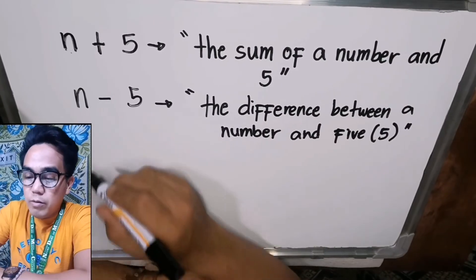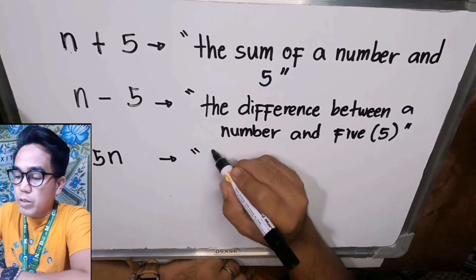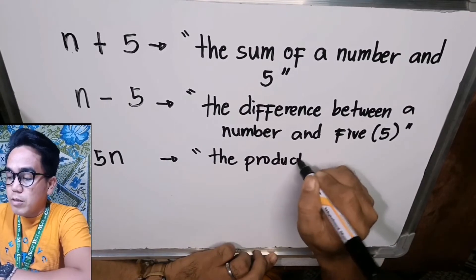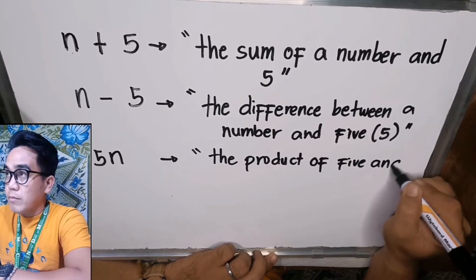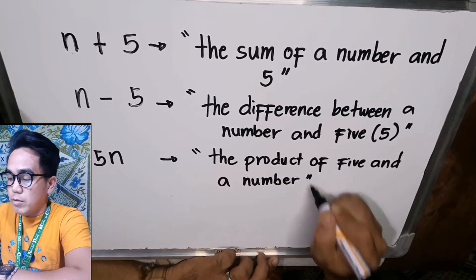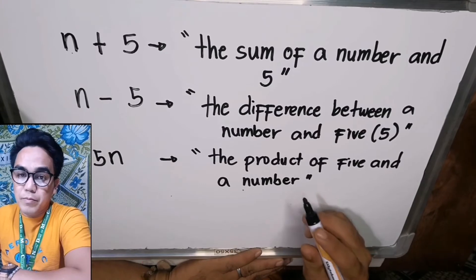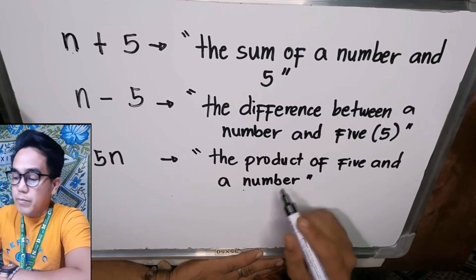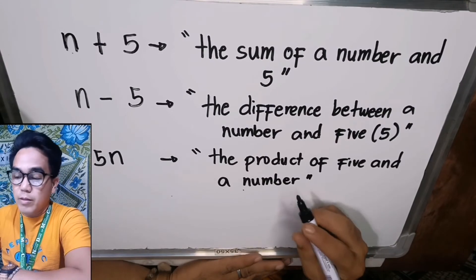How about five times n? We can use the word 'product' — 'the product of five and a number.' We can also say 'five times a number,' or 'five multiplied by a number.' These all represent the same multiplication expression 5n.